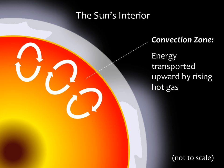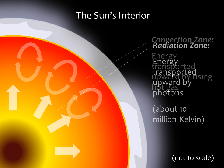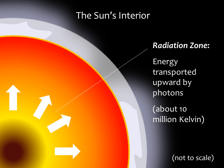Under the photosphere is the turbulent layer known as the convection zone, where energy generated in the solar core is transported upward by the rising of hot gas and the falling of cool gas. Below the convection zone is the calmer radiation zone, where energy moves outward primarily in the form of light. The temperature rises to almost 10 million kelvin in this region and there are more intense x-rays.